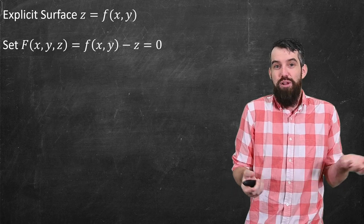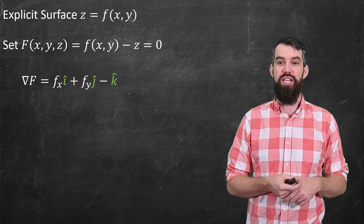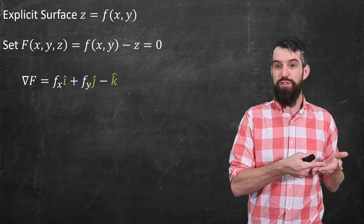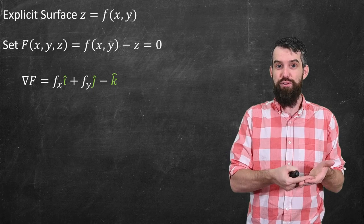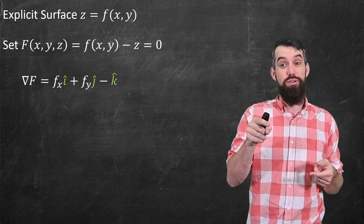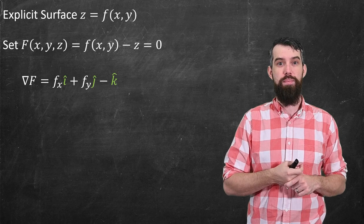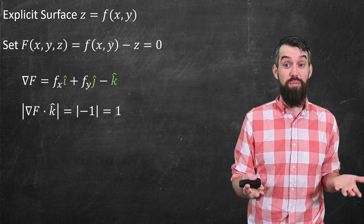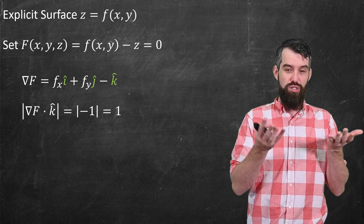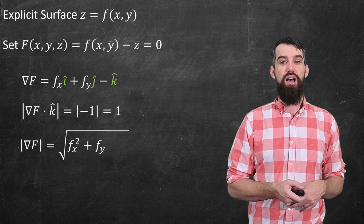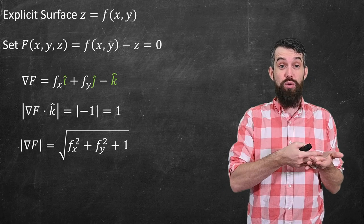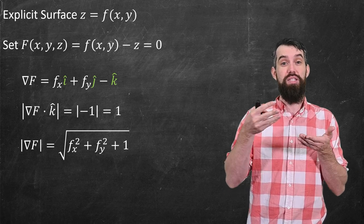Okay, and now I'm just going to plug it into the formula that I had. So what's the gradient of big F? Well it's partial of little f with respect to x in the i hat, partial of little f with respect to y in the j hat, and then minus z turns into a minus one in the k hat. The length of gradient of F dotted with k hat is pretty simple. It's just the minus one, which is one. And then the length of the gradient of F is the square root of the sum of the components. So square root of fx squared plus fy squared plus one.